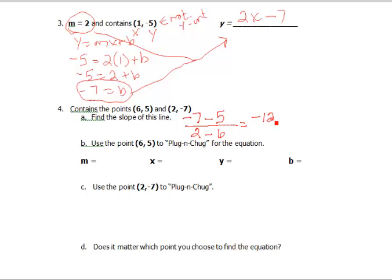This is negative 12 on top. 2 minus 6 would be negative 4, so negative 12 divided by negative 4 would be positive 3. I know that slope is 3.